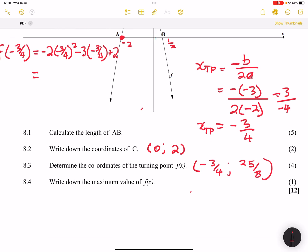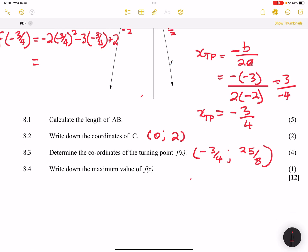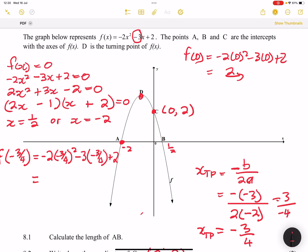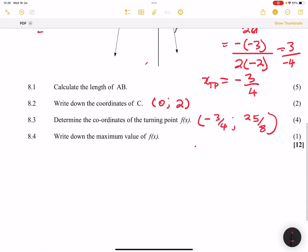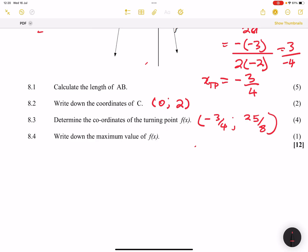And finally, ladies and gents, they say write down the maximum value of f(x). Well, the maximum value is the y value of the turning point. So that means that that is simply going to be, you can just simply say maximum point is equal to 25/8. Or you can say that's 3.125.